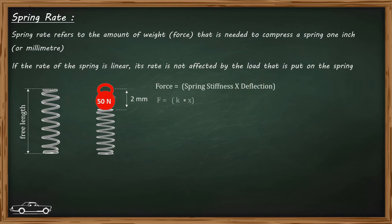If it compresses the spring by one millimeter, then the spring rate is 50 newton per millimeter. If it compresses the spring by two millimeters, then the spring rate is 25 newton per millimeter. We have the calculation listed and also the stiffness curve for a linear rate spring.